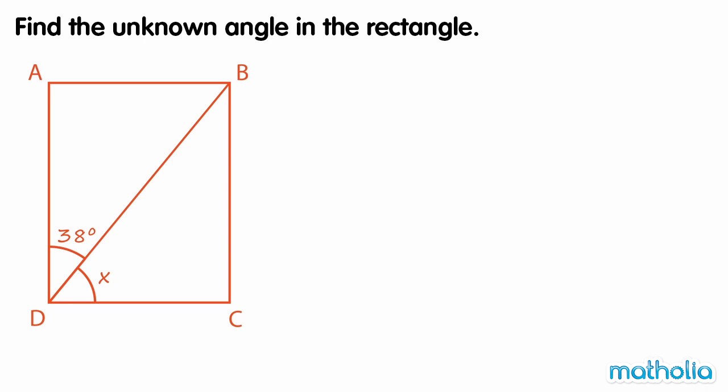Find the unknown angle in the rectangle. Figure ABCD is a rectangle. All of the angles inside a rectangle are right angles, so angle ADC is equal to 90 degrees.